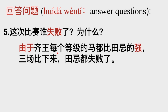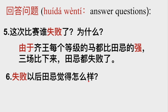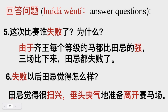第五个问题：这次比赛谁失败了？为什么？由于齐王每个等级的马都比田记的强，三场比下来田记都失败了。第六个问题：失败以后田记觉得怎么样？田记觉得很扫兴，垂头丧气的准备离开赛马场。